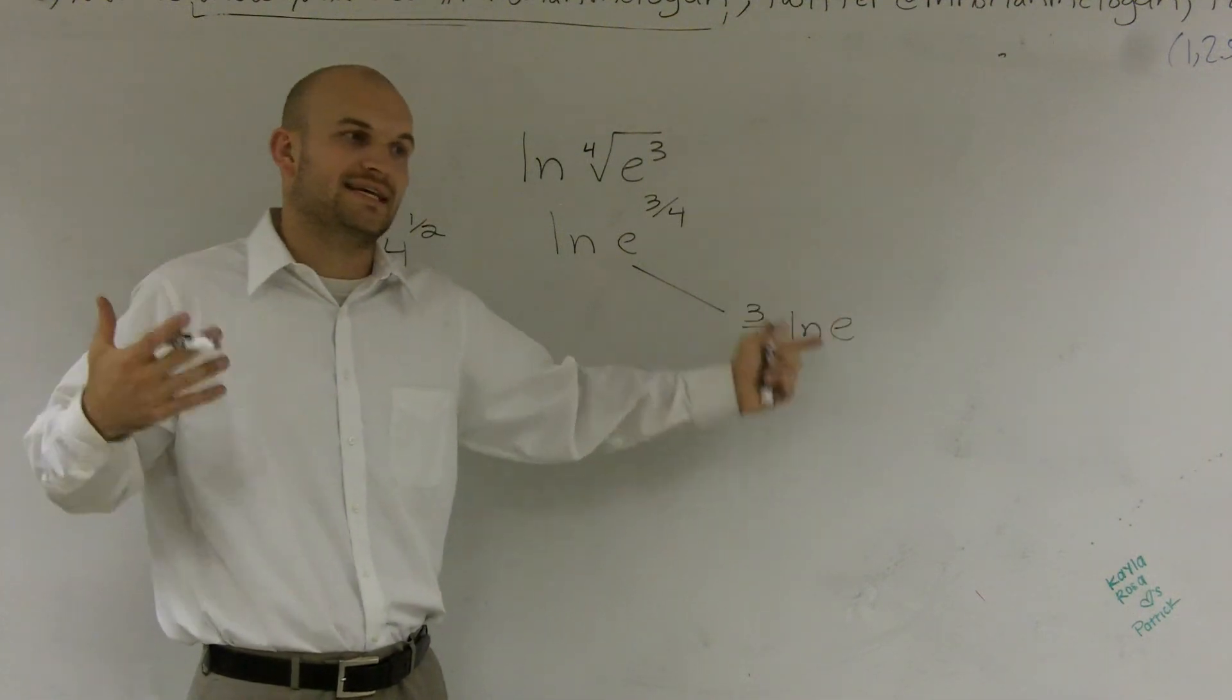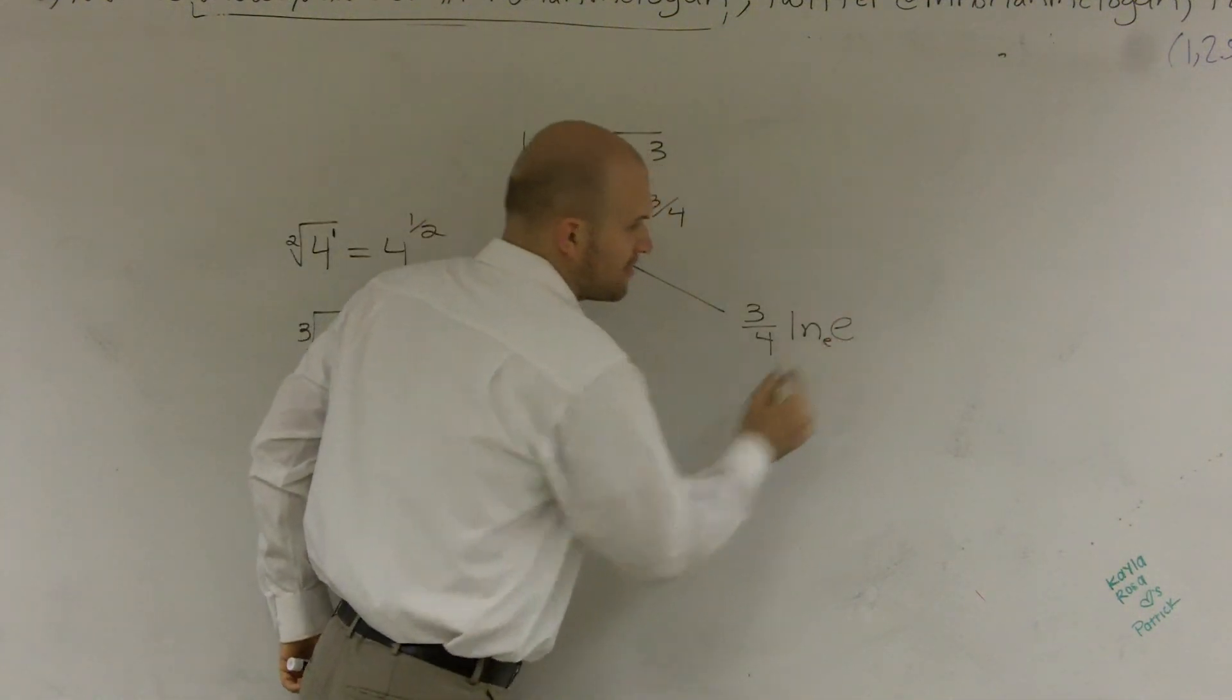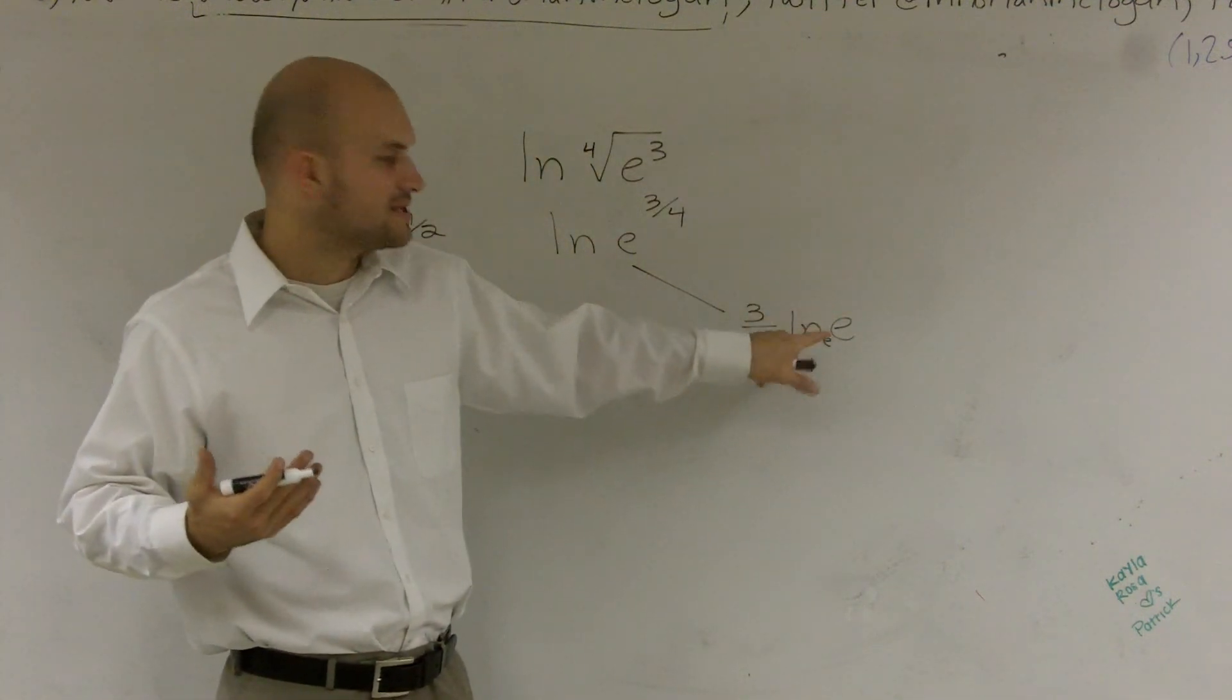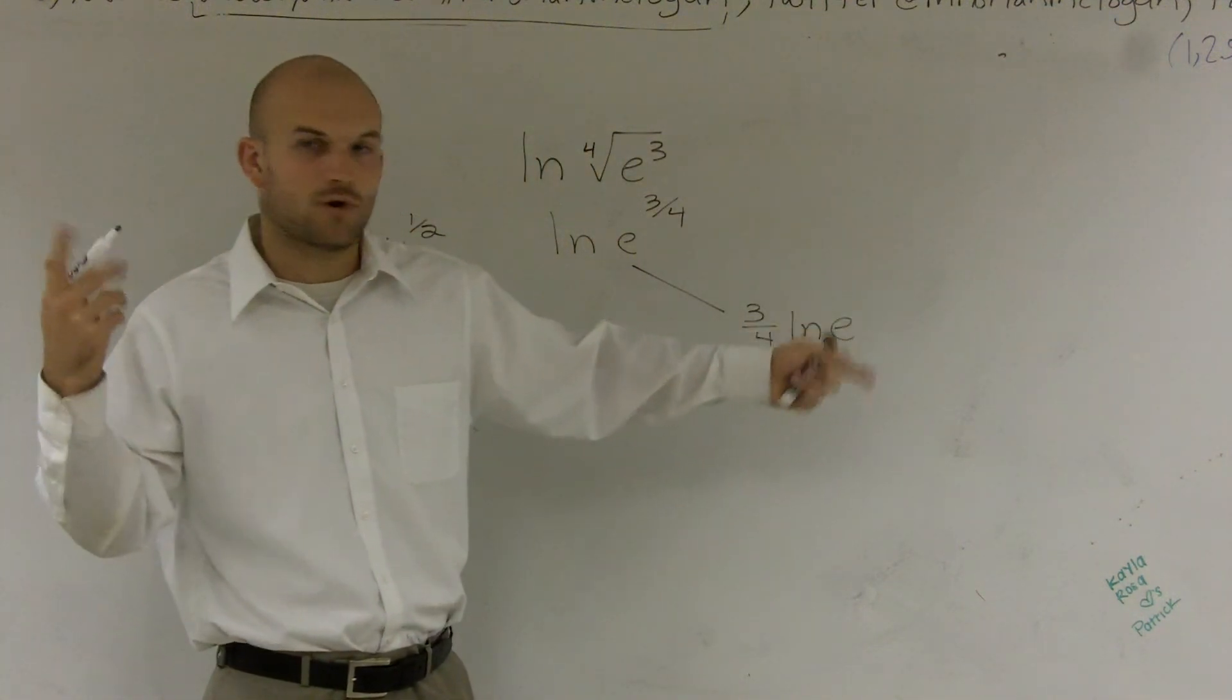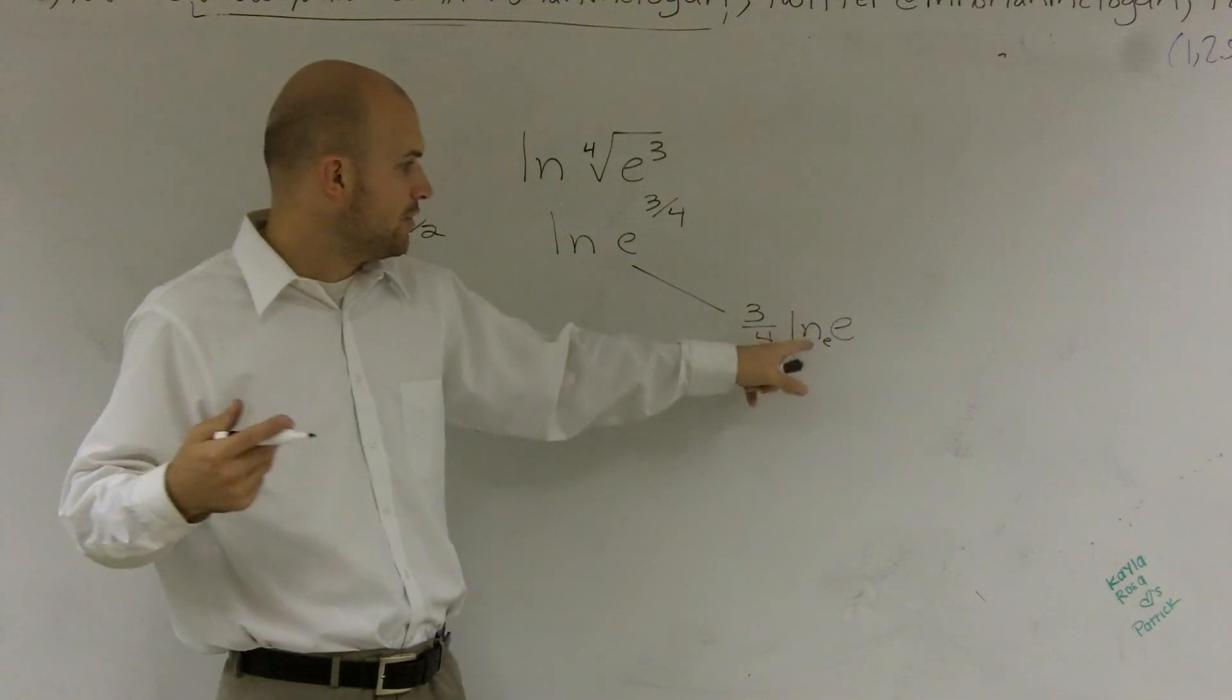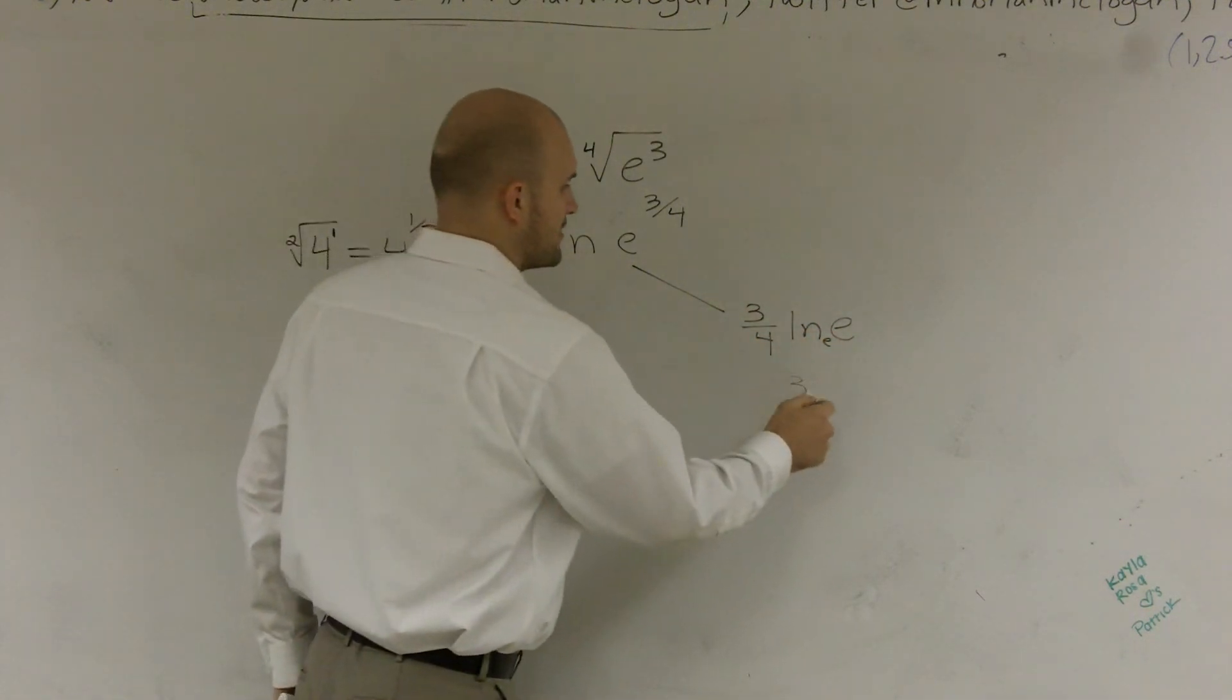So ln of e—or you should just know your properties—is going to always equal 1, because e (this little e right there, your base, which we don't have to write because it's assumed) raised to what power gives you e? Which is 1. ln of e is 1. 1 times 3/4 is 3/4.